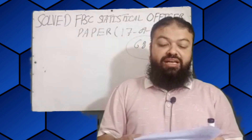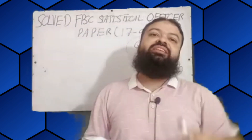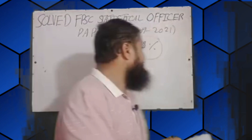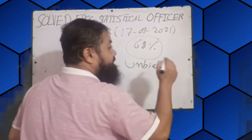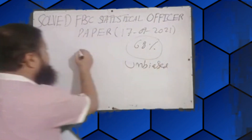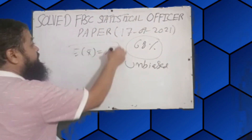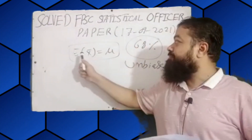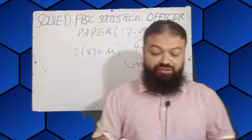Question number seven: sample mean is always what kind of estimator of the population mean? Sample mean, which is x-bar, is always an unbiased estimator of the population mean. This means the expectation of x-bar is always equal to the population mean. This is a very important concept.